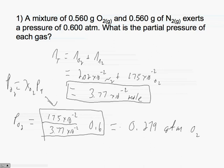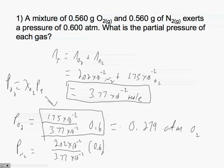The partial pressure for nitrogen equals 2.02 times 10 to the minus 2 divided by 3.77 times 10 to the minus 2, times 0.600 atm, which is equal to 0.321 atm of nitrogen. So 0.321 atm is the partial pressure of nitrogen, and 0.279 atm is the partial pressure of oxygen.